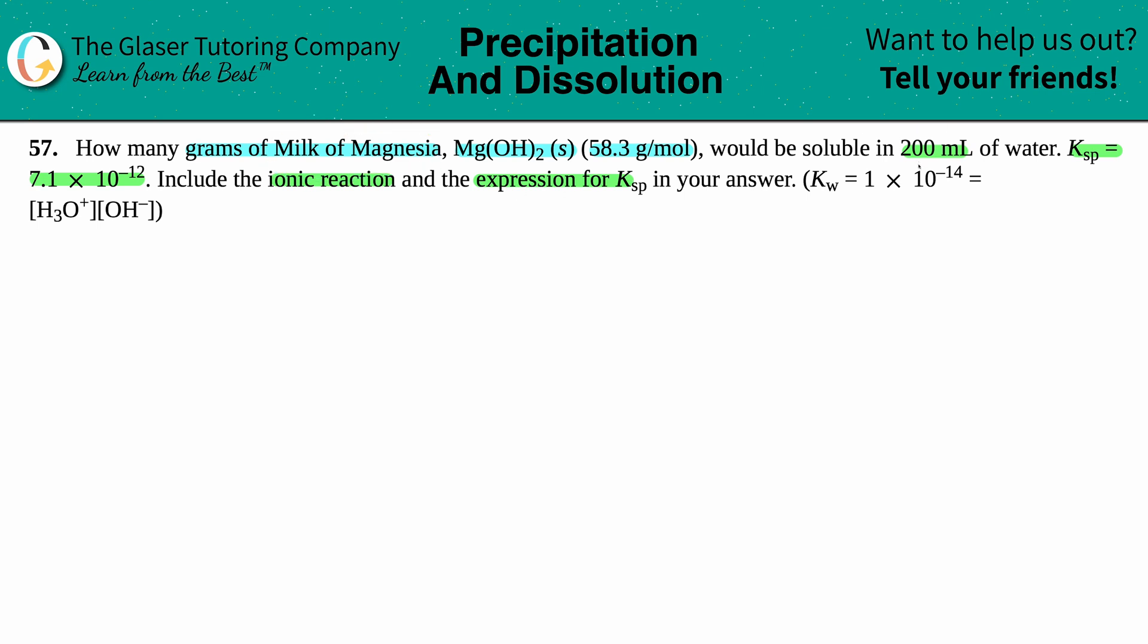We're asking for how many grams of milk of magnesia would be soluble in 200 mils, and they give us a Ksp. Now remember, with any Ksp always comes a balanced equation, and that's the ionic reaction they're looking for because ionic reactions just mean you have ions or charges. Ksp equations always have charges because you're dissociating into its ions. In this case, we're talking about milk of magnesia, aka Mg(OH)₂, and they told us it was a solid.